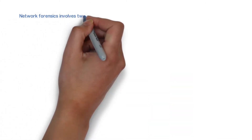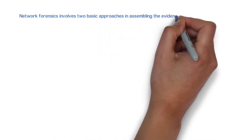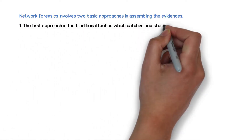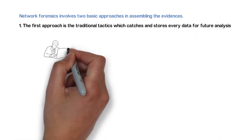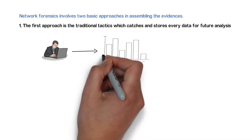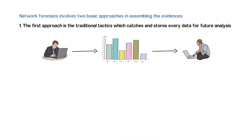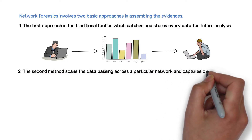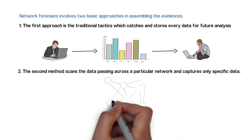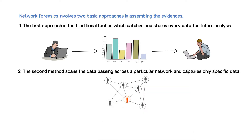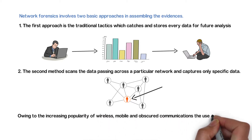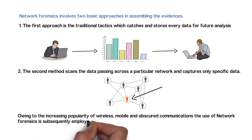Investigators must use proactive methods to capture network-related evidence as network traffic is usually unstable and dynamic. Network forensics involves two basic approaches. The first is the traditional approach, which captures and stores every data for future analysis — for example, logging users' network usage continuously and reviewing only in case of an alert. The second method scans data passing across a particular network and captures only specific data, for example categorizing jammed network sites and capturing precise user activity data formats.